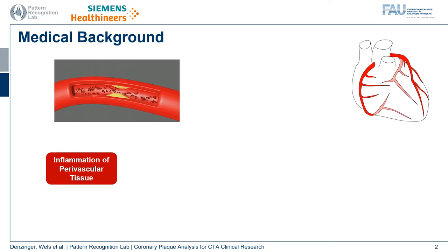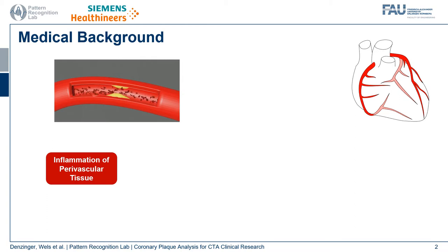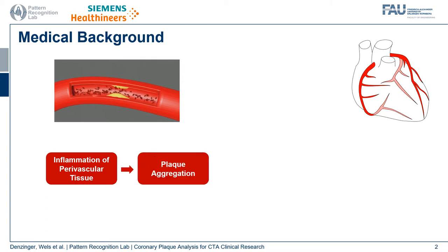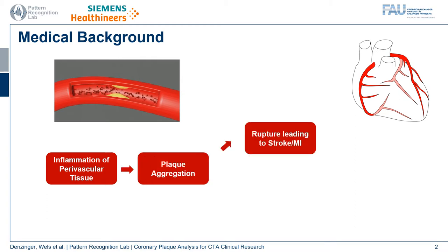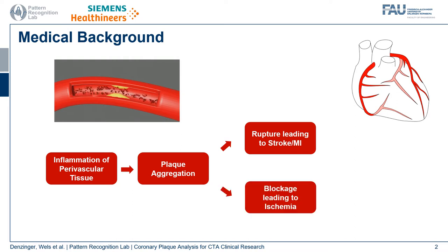The medical background behind this topic is that due to inflammation of the tissue surrounding vasculature and due to perturbations in the blood flow, plaque deposits can aggregate within the vessel wall. These plaque deposits can then rupture, which may lead to stroke or myocardial infarction, or they can block the blood flow and therefore lead to ischemia.